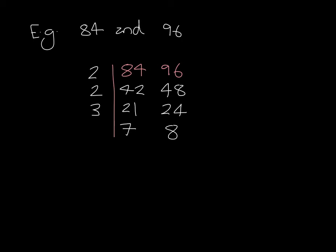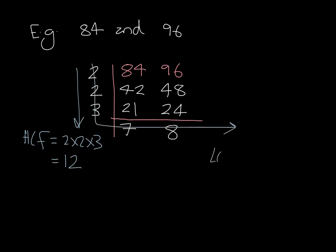7 and 8 have no factors in common, other than 1, so we rule off at this point here. The highest common factor is the product of the three numbers in the vertical column. So 2 multiplied by 2 multiplied by 3, which is 12. And the lowest common multiple is obtained by multiplying these numbers together. So the lowest common multiple is 2 multiplied by 2 multiplied by 3 multiplied by 7 multiplied by 8. We know that 2 multiplied by 2 multiplied by 3 is 12, so it's the product of 12, 7 and 8, which is equal to 672.